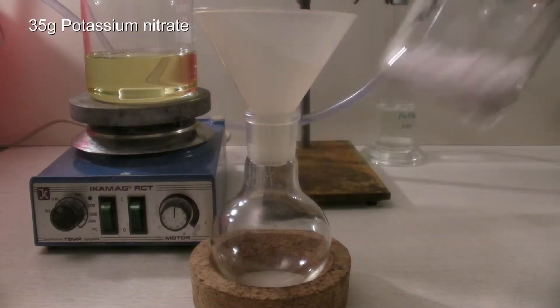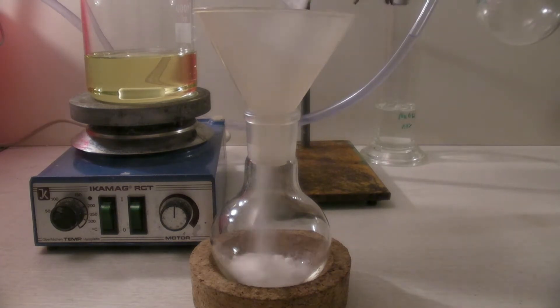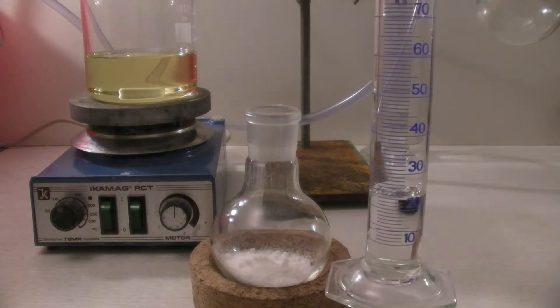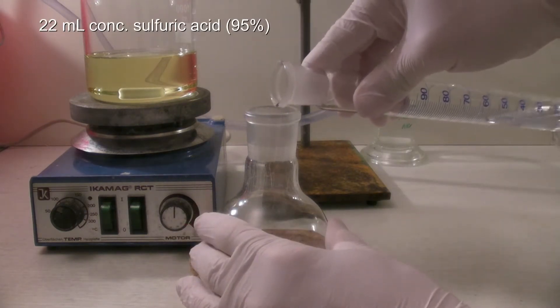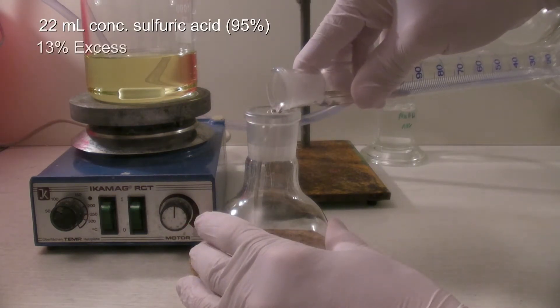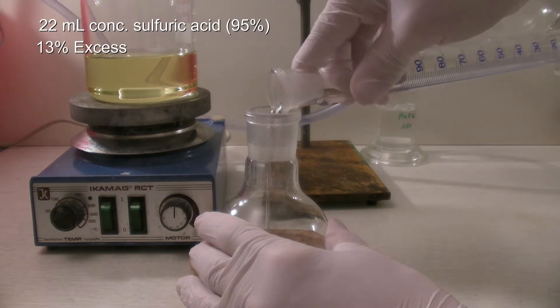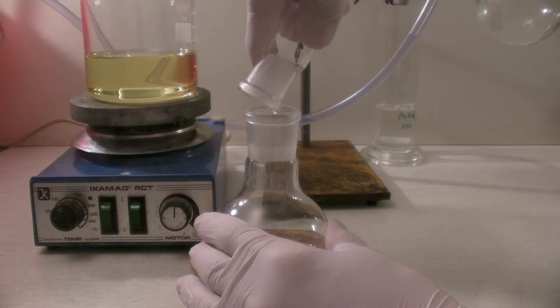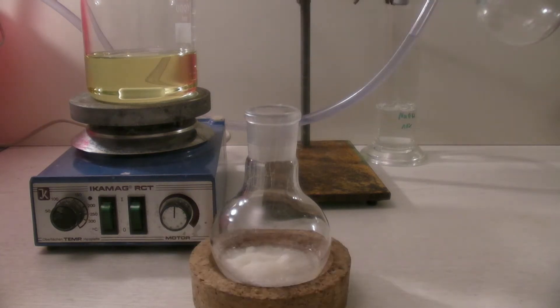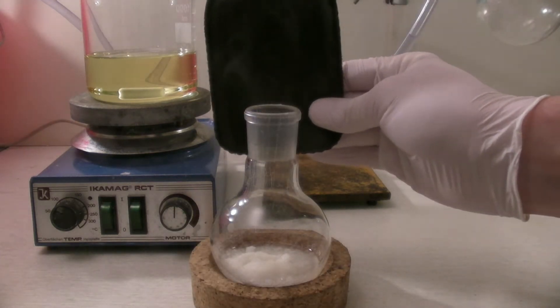At first, 35 grams of potassium nitrate are added to the flask. To this, 22 milliliters of concentrated sulfuric acid are added, which is an excess of around 13%. After the addition of the acid, fumes of nitric acid begin to form immediately.